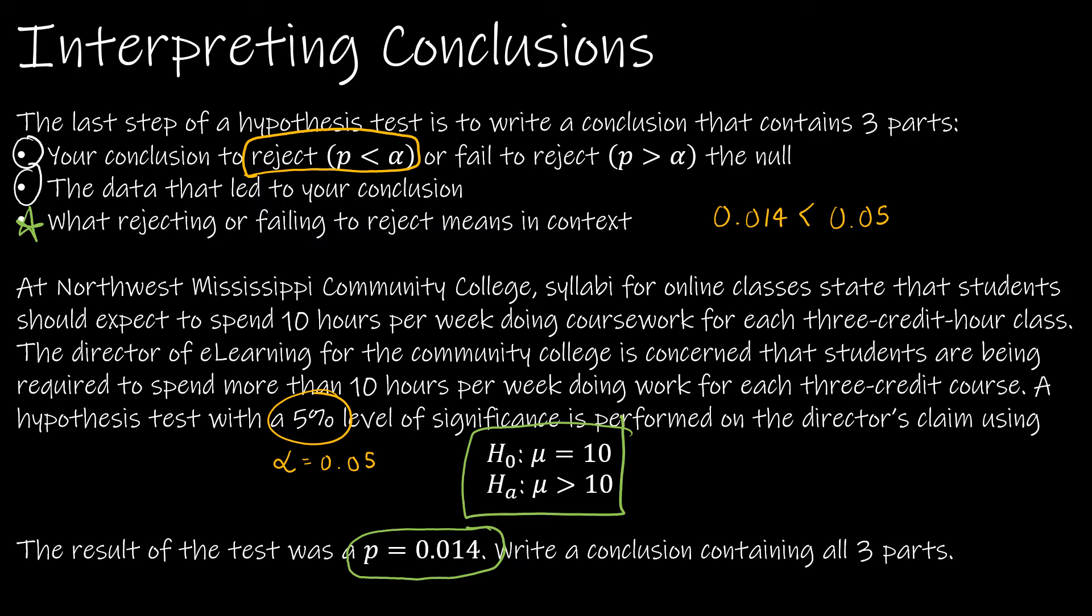What does that mean? That means I have evidence to say that this is not true. And therefore, I have sufficient evidence to support the alternative hypothesis. So without writing it out, the basics are I just found enough information to say it's probably not true that students are spending 10 hours per week studying. It's probably true, because I have sufficient evidence to say so, that students are spending more than 10 hours per week studying.